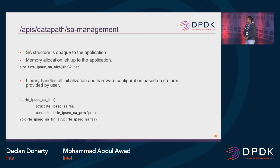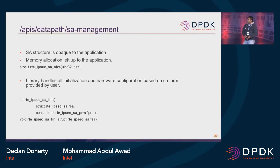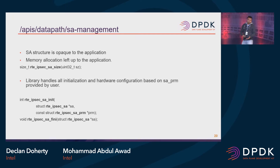To do that we have an API for getting the size for an SA. It takes a parameter which is the window size for allocating the replay attack window. Once you have the total size of the SA, the application allocates memory for the SA and then calls the initialization API called IPsec_sa_init. The parameters are the SA and the SA param, which provides all the user-provided parameters like what kind of crypto is going to be supported, ESP-related information, the header information like tunneling header or transport, and all the crypto transform parameters.